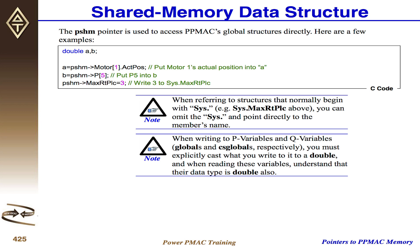Since you're operating in a C environment, you need to properly typecast the data when either writing to or reading from structures in PMAC. P variables and Q variables are both of type double when observed from C, so you need to write a floating point value to them.